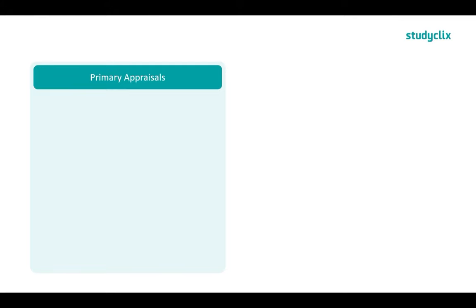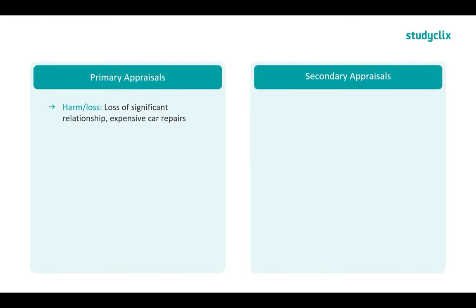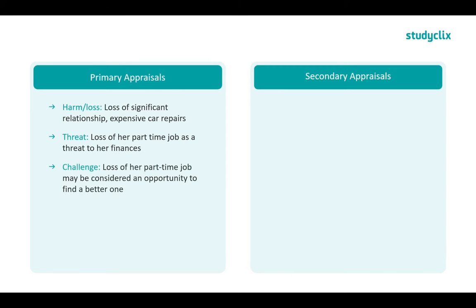Starting with her primary appraisals: the first is harm or loss — she's lost a significant relationship and lost money for expensive car repairs, representing damage that has already been done. We could also identify a threat — losing her part-time job is a threat to her finances, as she could lose money in the future. We could also deem it a challenge — losing her part-time job may be considered an opportunity to find a better one. So we can see there are different primary appraisals that could be made.